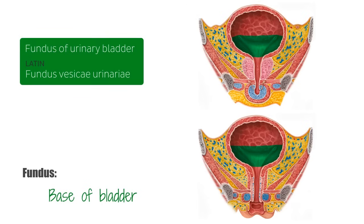In females, the fundus is closely related to the anterior wall of the vagina. The fundus contains the trigone of the bladder, which we're going to talk about next.